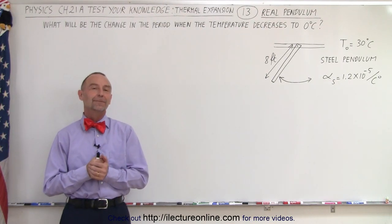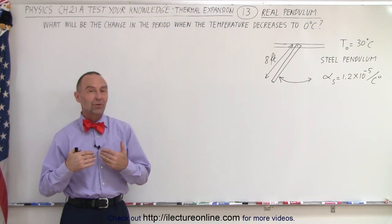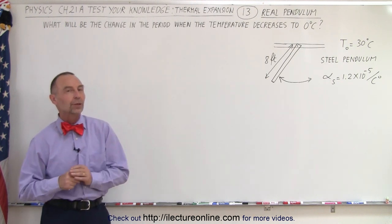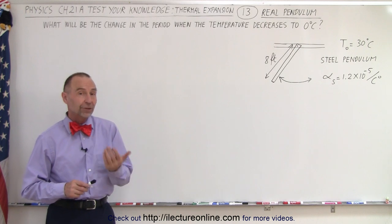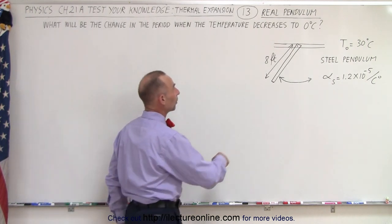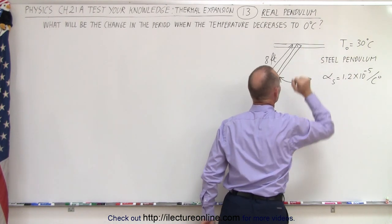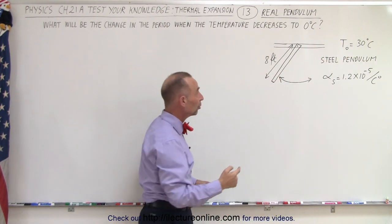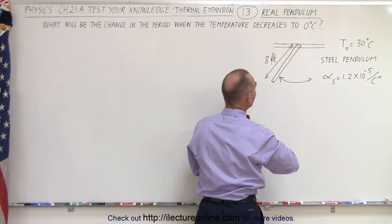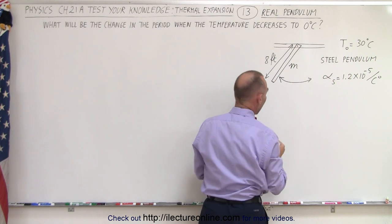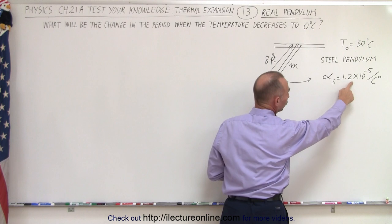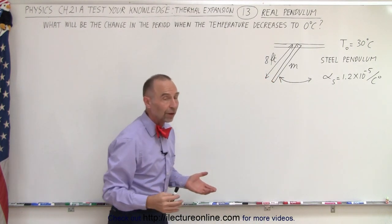Welcome to Electron Line. Now let's see what happens with a real pendulum when the temperature changes and the length of the real pendulum changes. How much will the period of this pendulum change when the temperature goes from an initial temperature of 30 degrees centigrade to 0 degrees centigrade? The real pendulum is an 8-foot long bar made out of steel with a mass equal to m, and the coefficient of linear expansion is 1.2 times 10 to the minus 5 per centigrade degree.